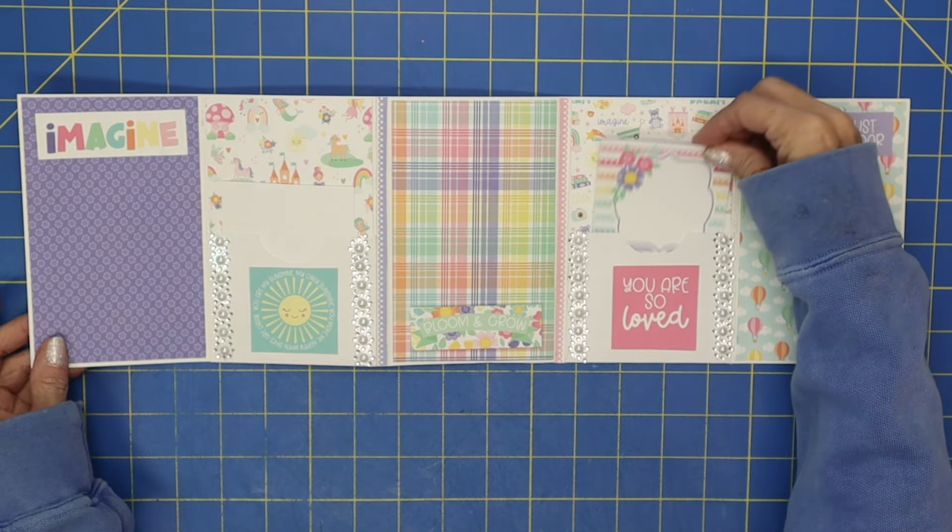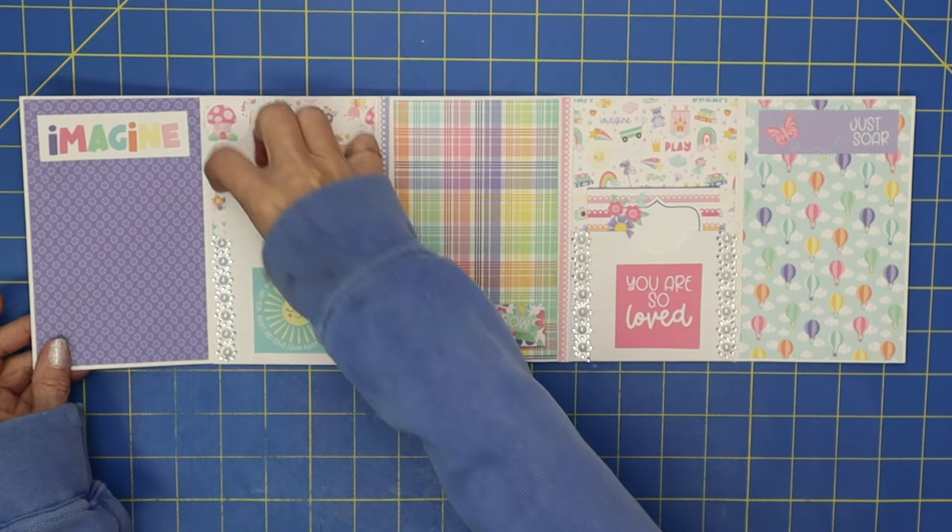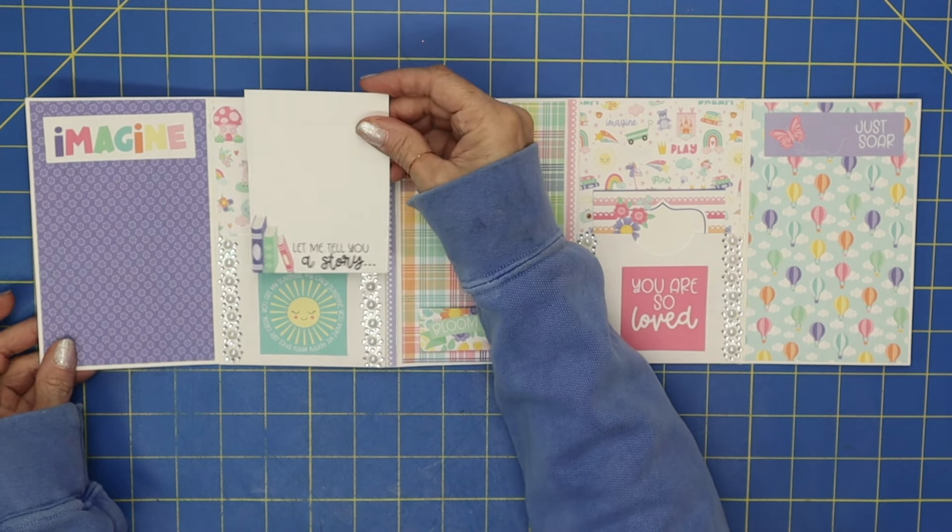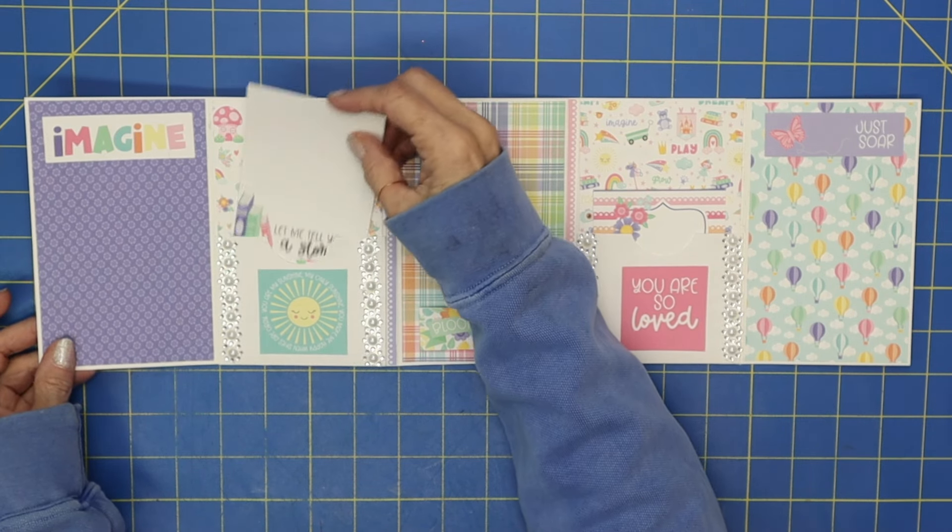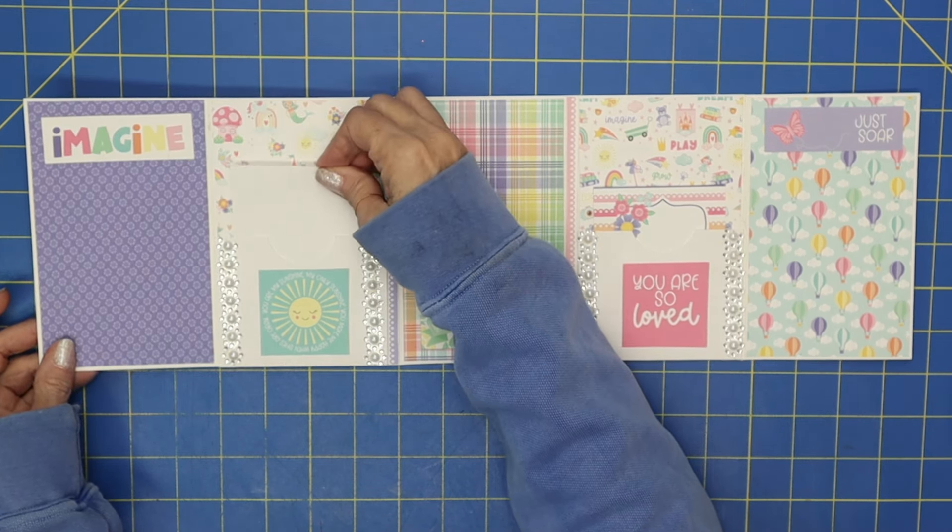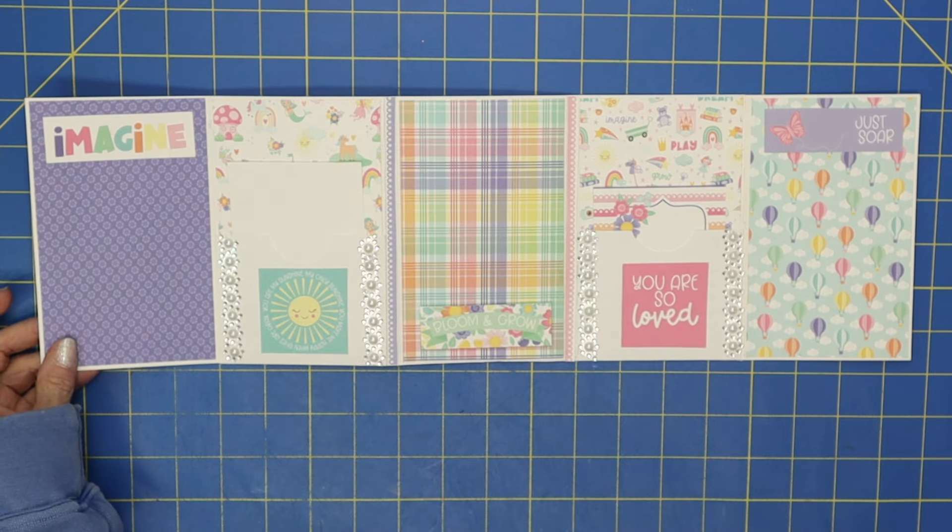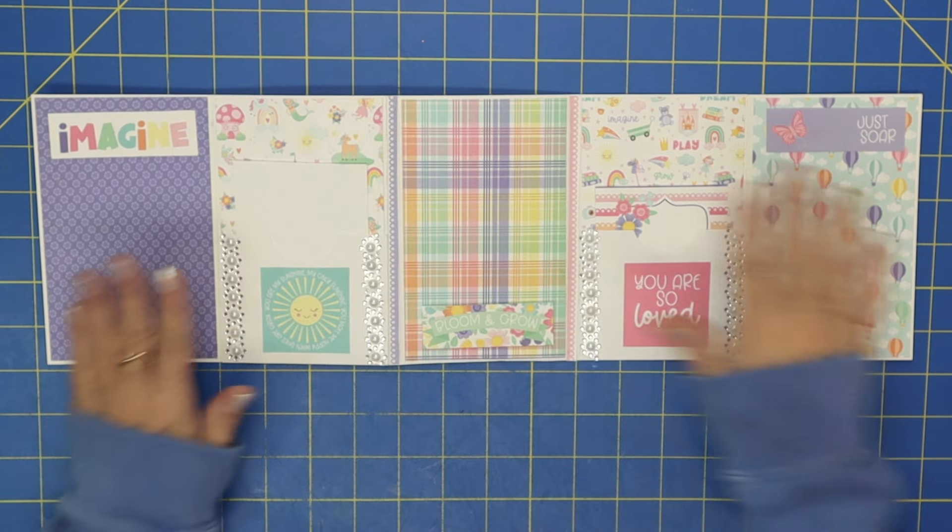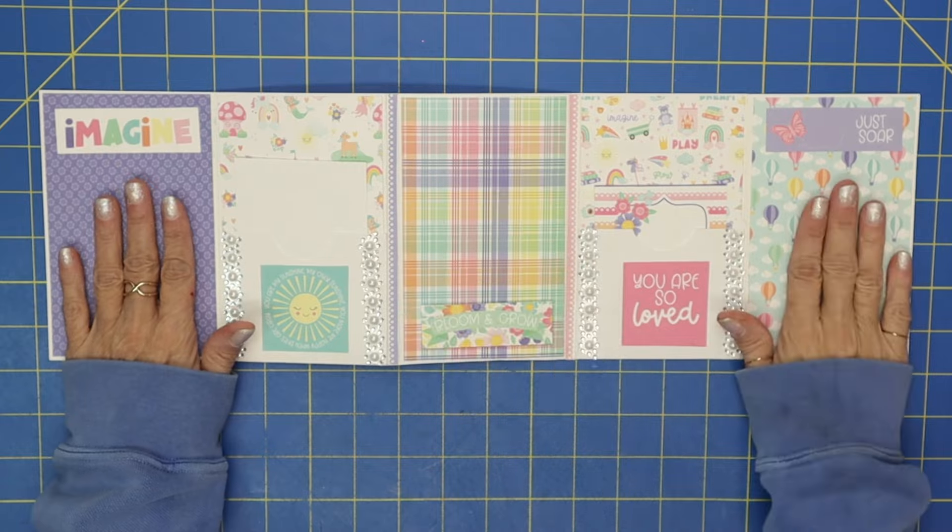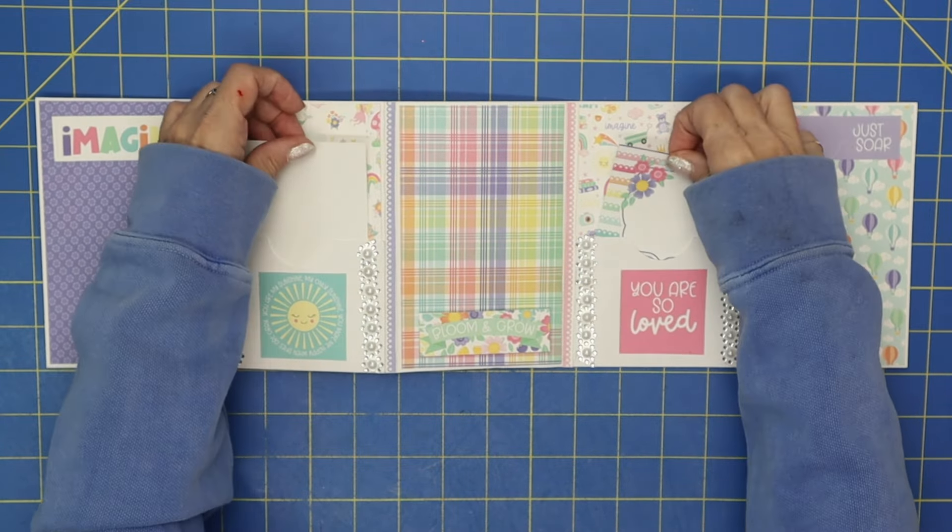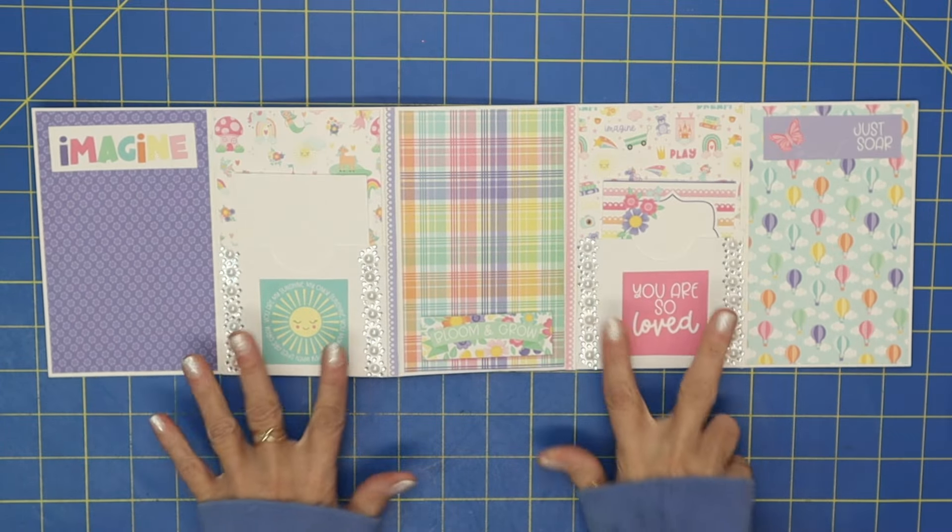And then you open that up and you've got two adorable little pockets here. Look at that cute little insert, and then this one over here says 'Let me tell you a story.' I thought that would be so cute to have like a child's handwriting just writing down a cute little story on that. But here you've got some places for some photos and then your wonderful text spots and I've added some bling here.